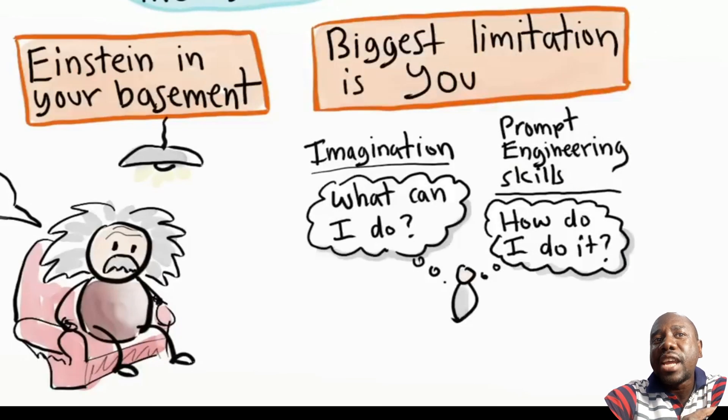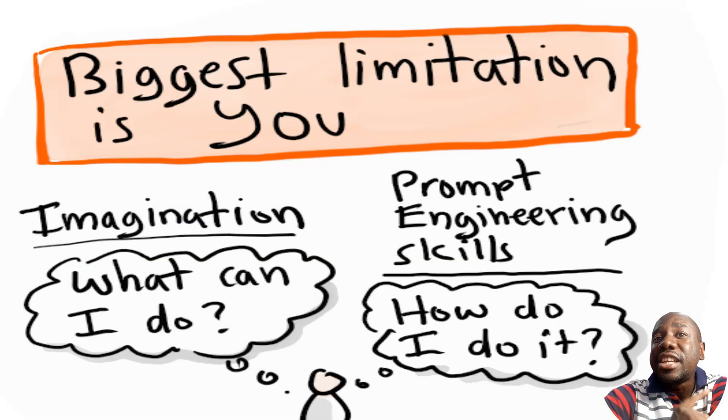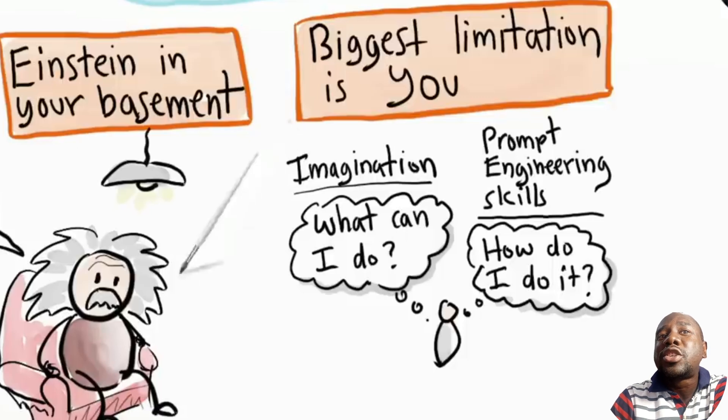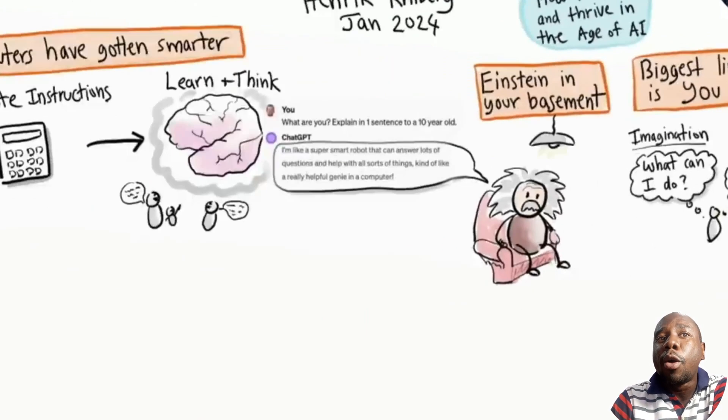The biggest limitation is actually your imagination and your ability to communicate effectively with him. This skill is called prompt engineering, and in the world of AI it's essential, as essential as reading and writing. Most people vastly underestimate what this Einstein can do in your basement. The more you interact with Einstein, the more you will discover surprising and powerful ways for him to help you or your company.